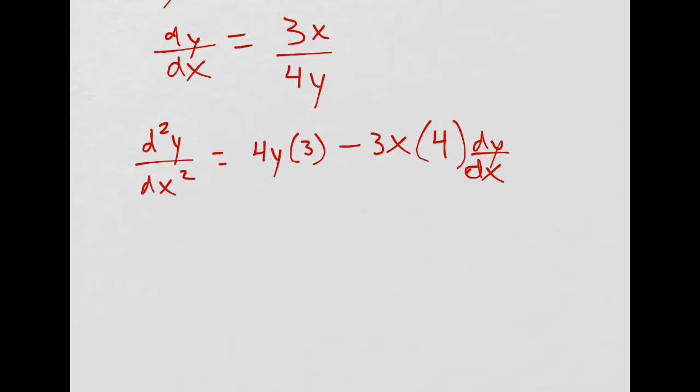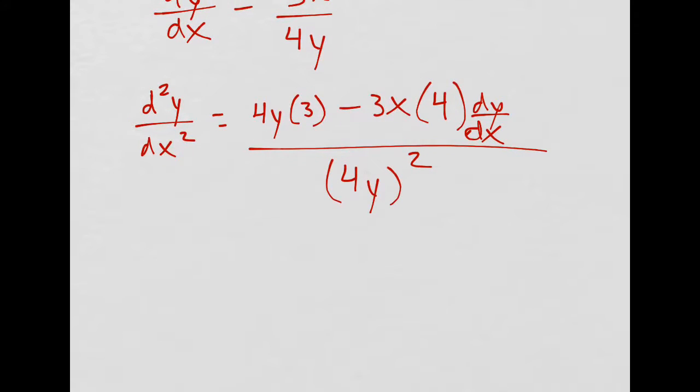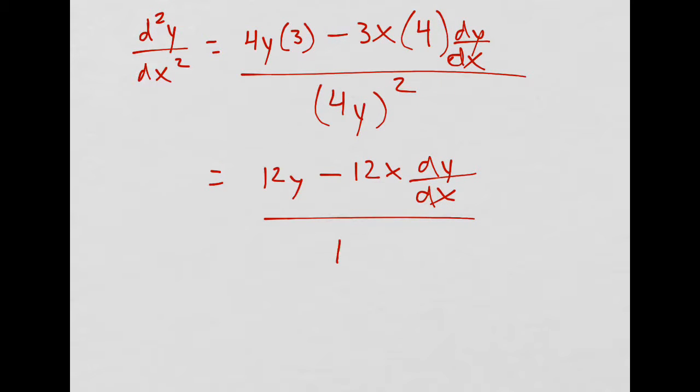Low d high minus high d low all over low squared, so 4 over y squared. I'm going to simplify a tiny bit, I'll have 12y minus 12x dy/dx, and that's a 16y squared because you kind of distribute the exponent.